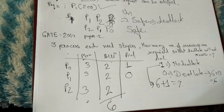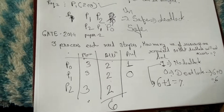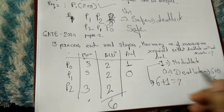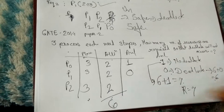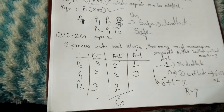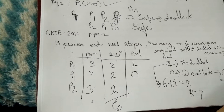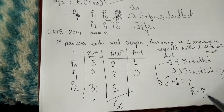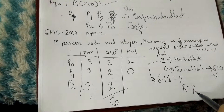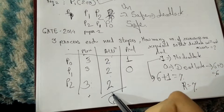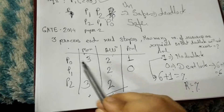Another variation: if there are 7 total resources and the maximum need of each process is 3, how many processes can be served without deadlock? You can allocate 2 resources to each process; with available = 1, there is no deadlock, so only 3 processes can be served.